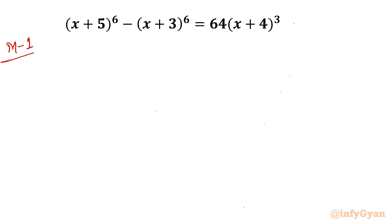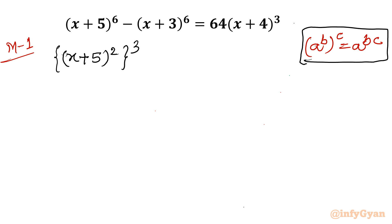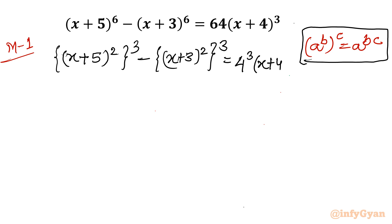Here I will use one exponential property: (a^b)^c = a^(bc). So I will write our very first term (x+5) whole power 6. This power I will split as (x+5)² whole cube — since 2 times 3 is 6, using this exponent law. Similarly I will write (x+3)² whole cube. On the right hand side it is 4³ times (x+4)³.